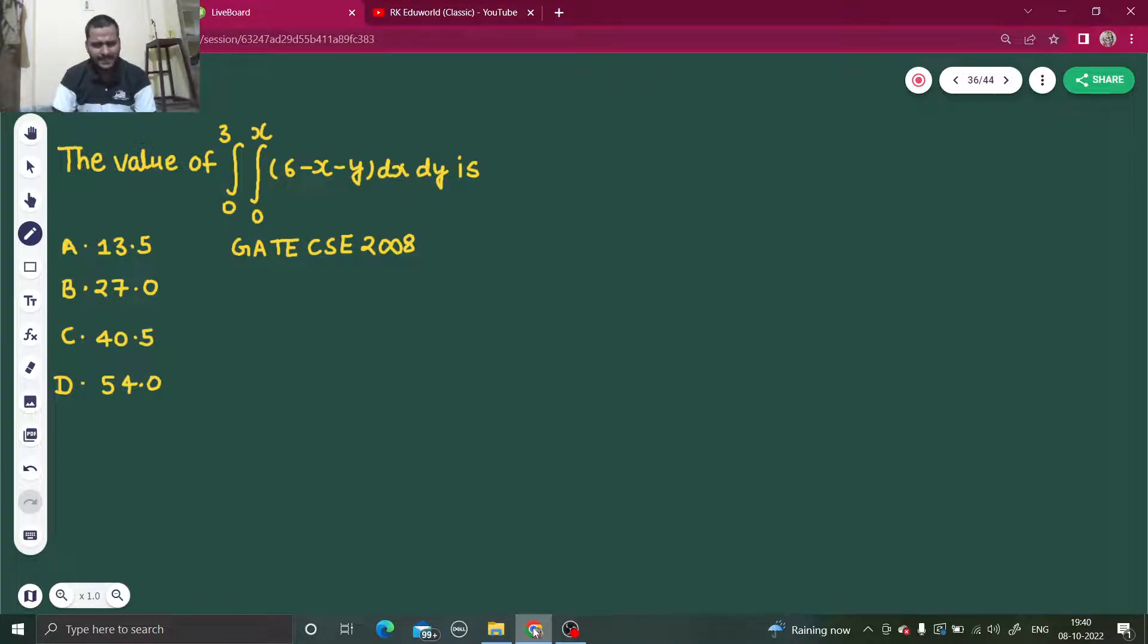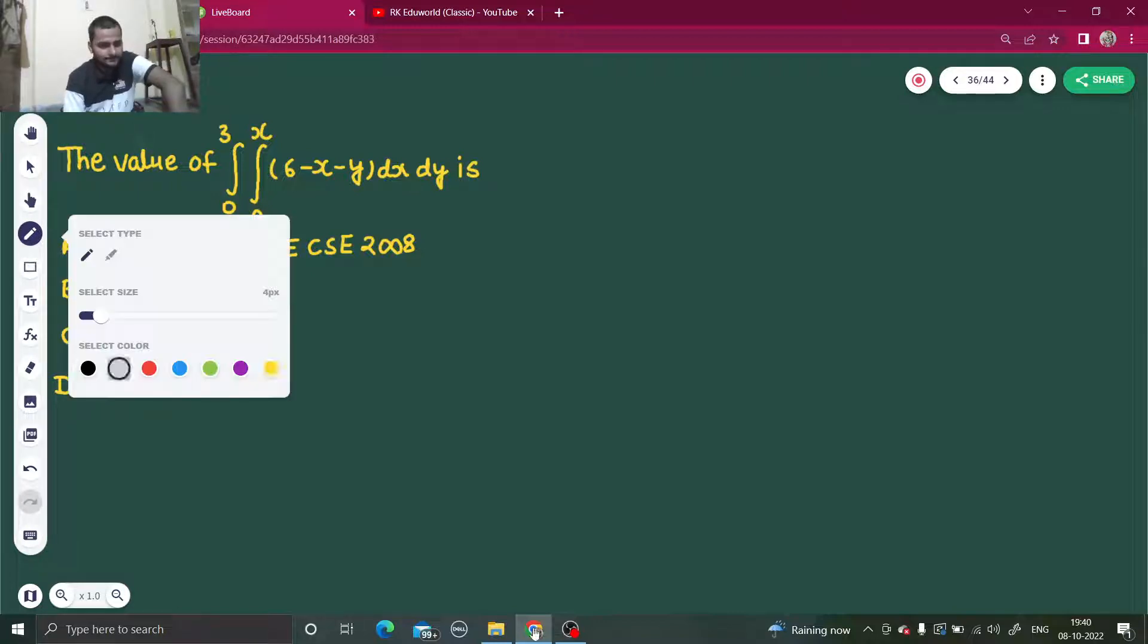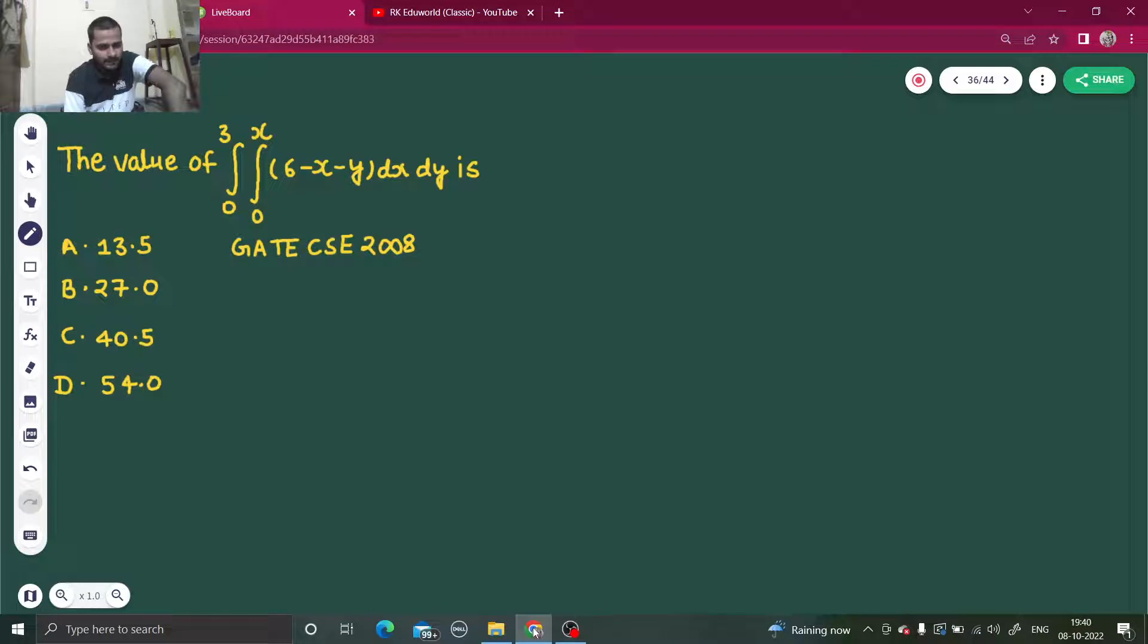Double integral's simple concept is that we can solve one integral at a time. Because the limit is 0 to x, I'm talking about the inner integral limit 0 to x, this must be the limit of y because the limit of x can't be in terms of x. So the inner one is the limit of y, the outer one obviously then remains the limit of x. So how can we solve this? What will we do?